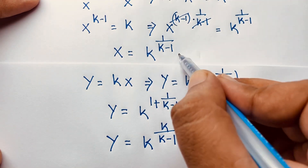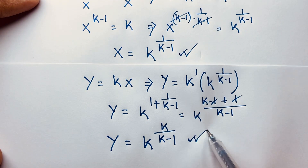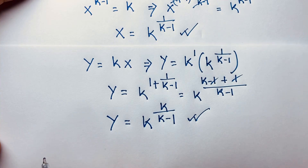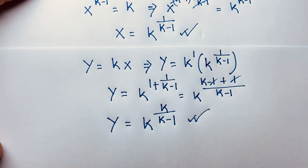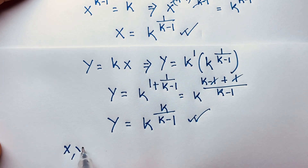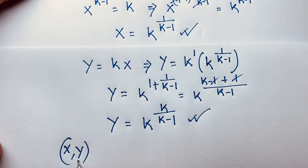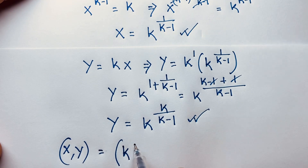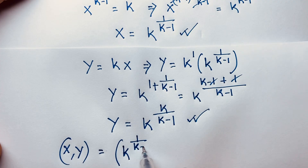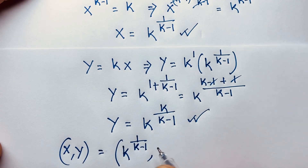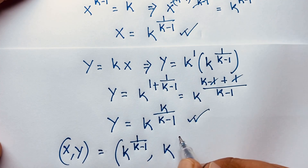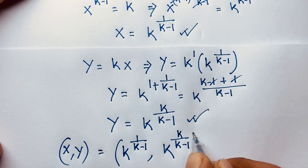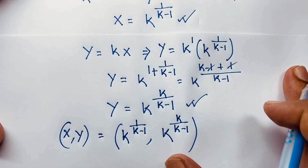So our final answers are: x is equal to k to the power 1 over k minus 1, and y is equal to k to the power k over k minus 1.